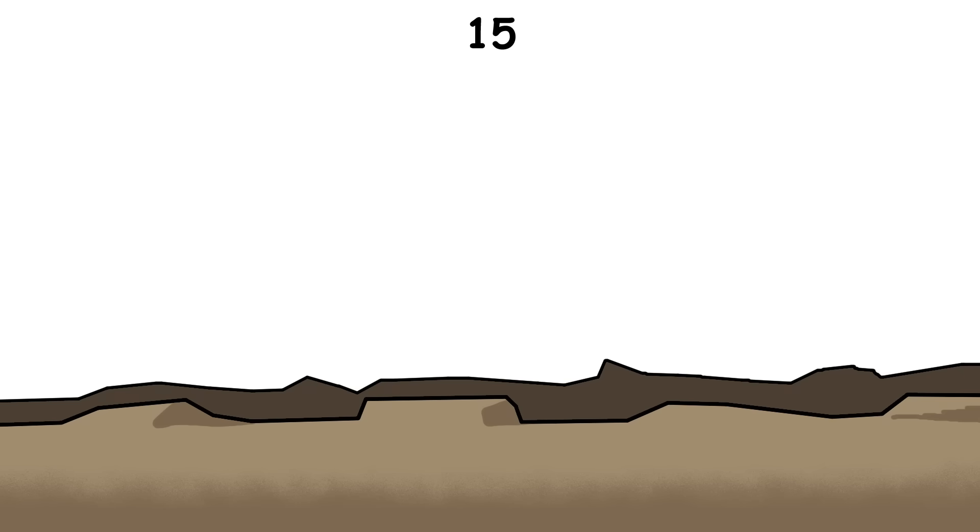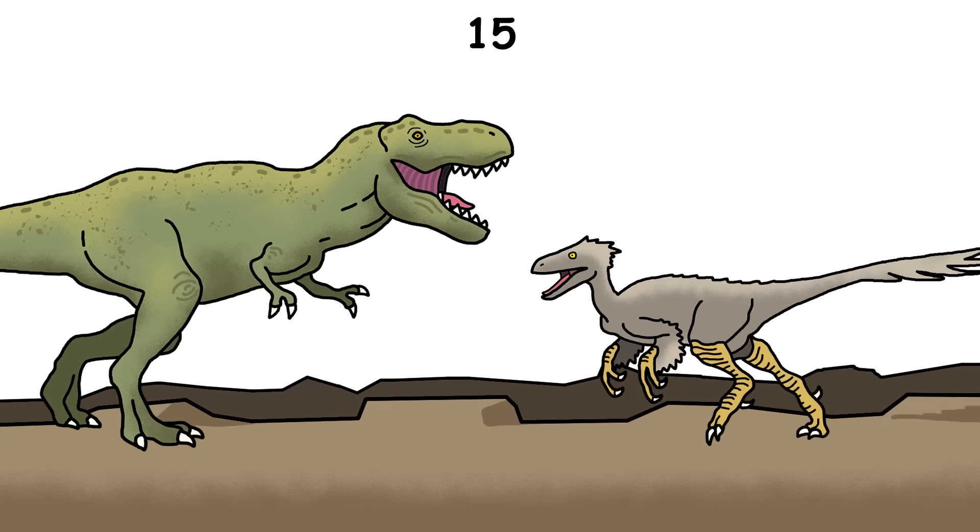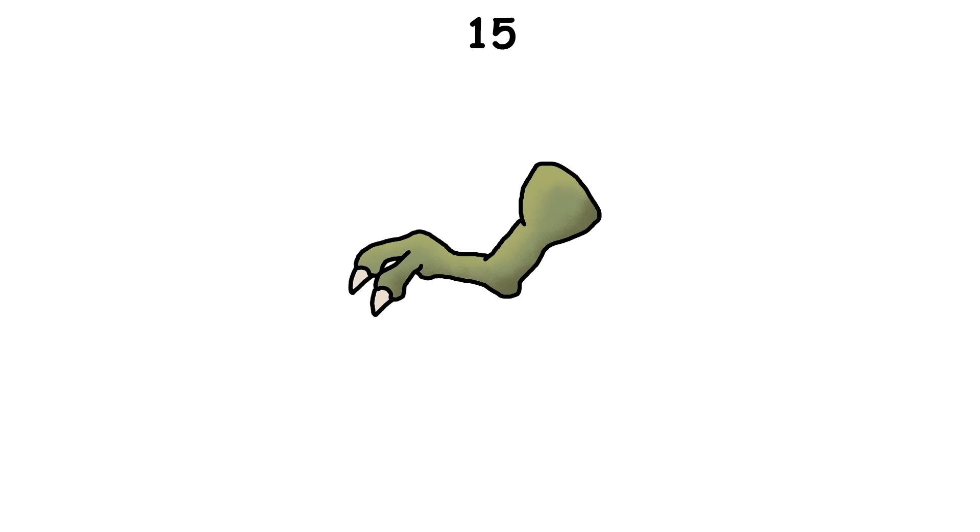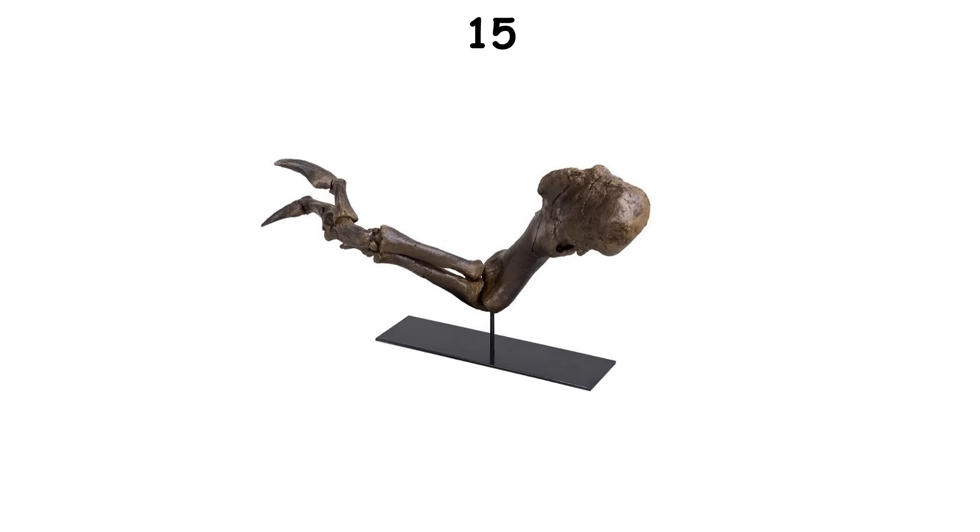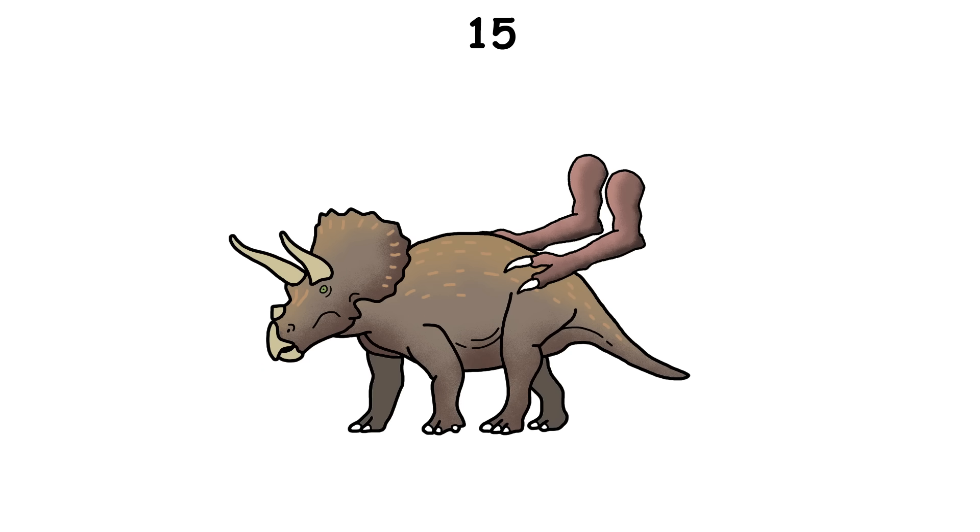Many illustrations show theropod dinosaurs like Velociraptor or T. rex with palms facing down, like they're about to push something, but that's anatomically impossible. Theropod wrists couldn't rotate that way. Their hands faced inward like clapping hands. This was ideal for grasping, not pushing.